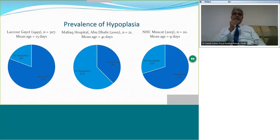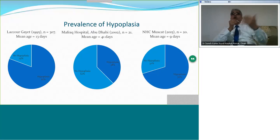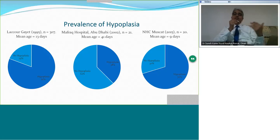Looking at these three comparisons: Professor Lacougue's data shows 84% incidence of hypoplasia; my data from the hospital shows 38% hypoplasia; and my current data shows 70% hypoplasia. One factor is glaring — the lower the age, the greater the prevalence of hypoplasia. The tougher coarcts present very early. The older your patient, the more natural selection they have undergone, which is why you are likely to find a discrete coarctation in an older patient.